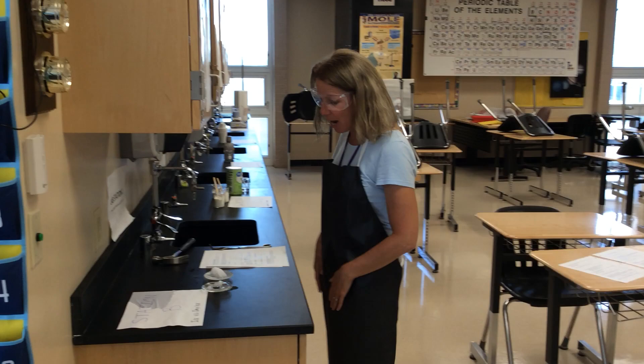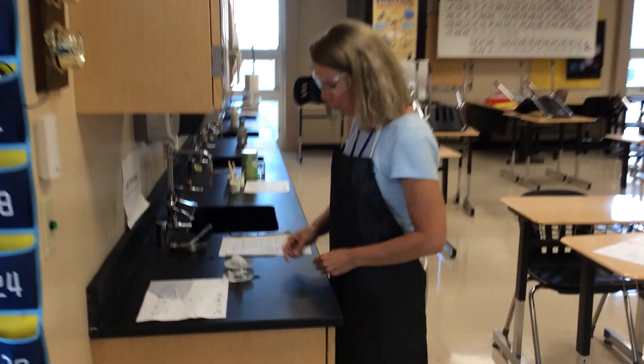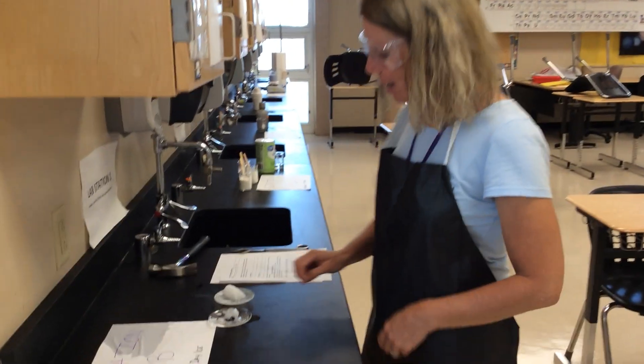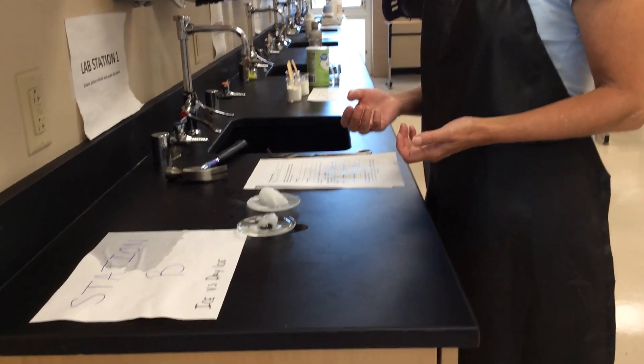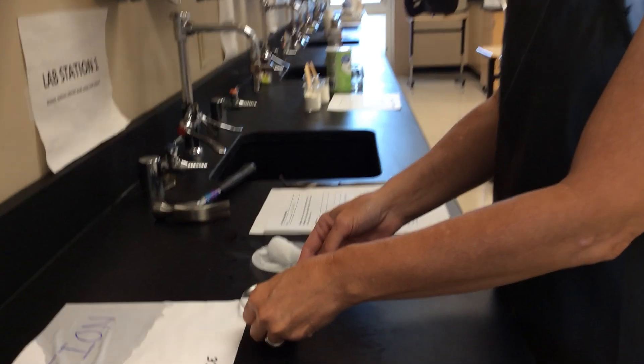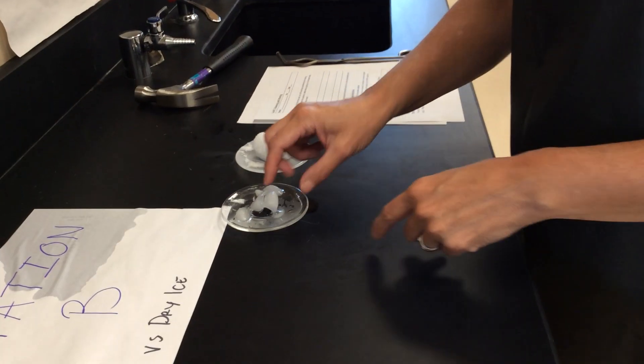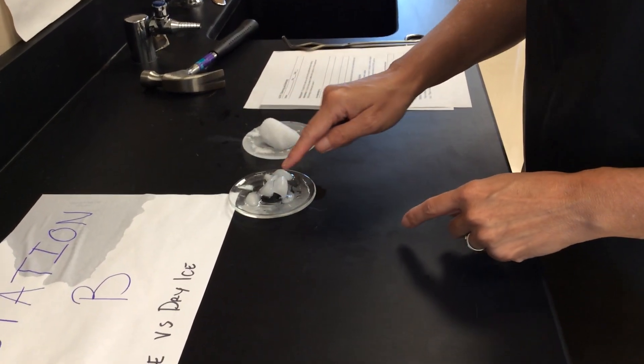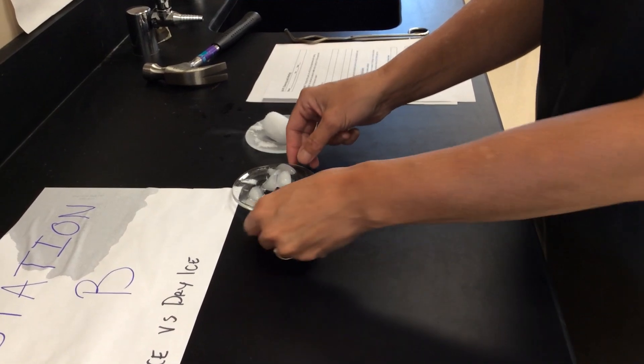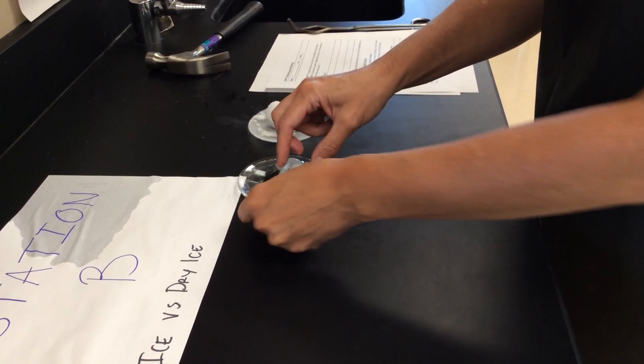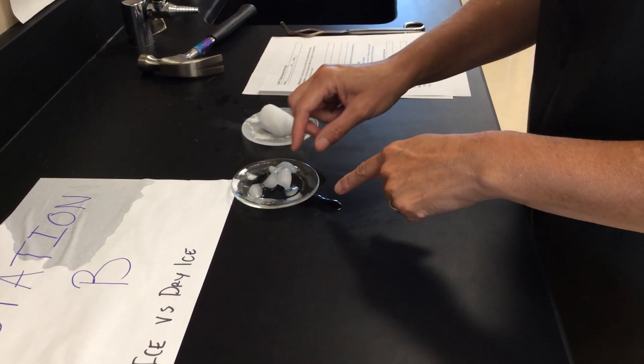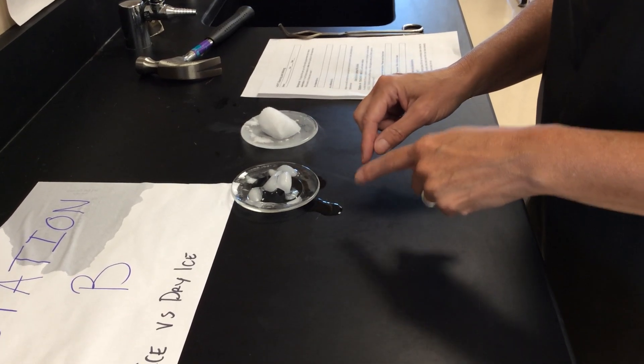We're taking a look at ice, just regular ice that you would have in your freezer, and we're comparing it to dry ice. So we're thinking about observations. Notice this about our ice. It looks like it's melting. So we've got solid ice, and then we've got something that's a liquid as well. So we've got two states of matter here.